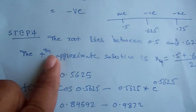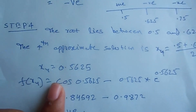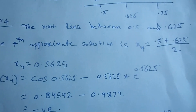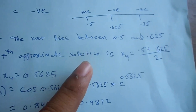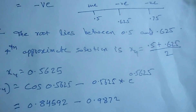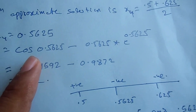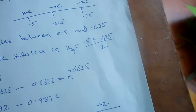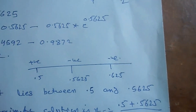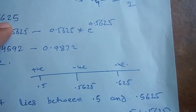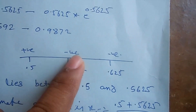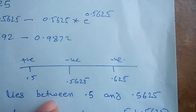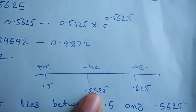Step 4: the root lies between 0.5 and 0.625. The fourth approximate solution is x4 = (0.5 + 0.625) / 2 = 0.5625. f(x4) = cos(0.5625) minus 0.5625·e^0.5625, which is a negative value. At x=0.5 it is positive; at x=0.5625, it is negative. So the root lies between 0.5 and 0.5625.